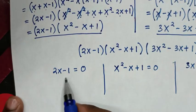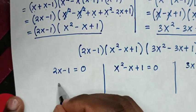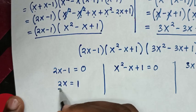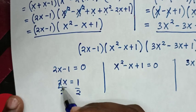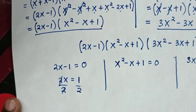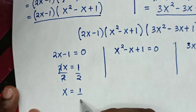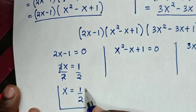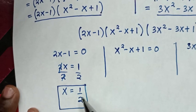From the first solution, we take negative 1 to the right side: 2x equals 1. Then dividing both sides by 2, this and this cancel, giving x equals one half. Therefore, this is the first value of x, which is the real solution.